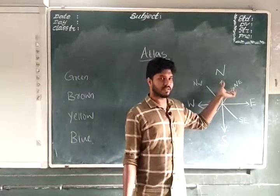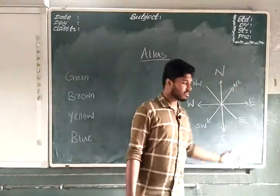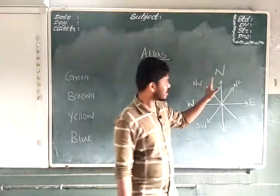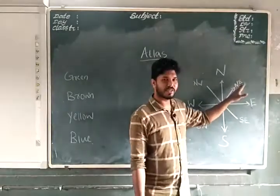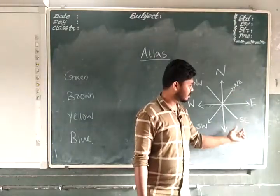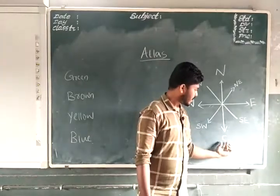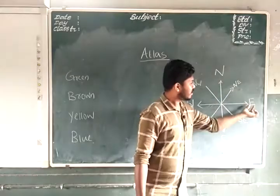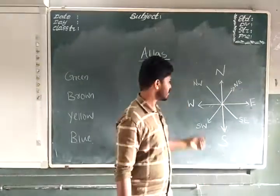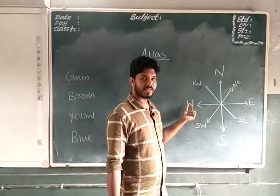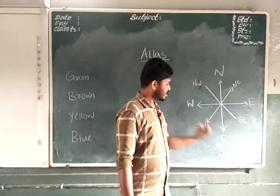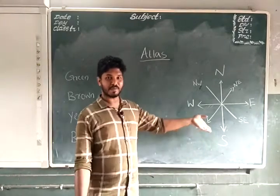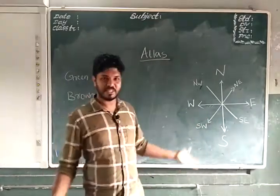So in between east and north, we have northeast. In between north and east, it will be northeast. In between south and east, it will be southeast. NW gives northwest. SW gives us southwest. So these are the cardinal directions.